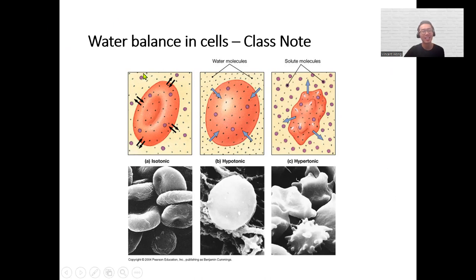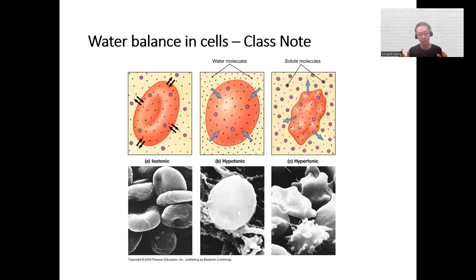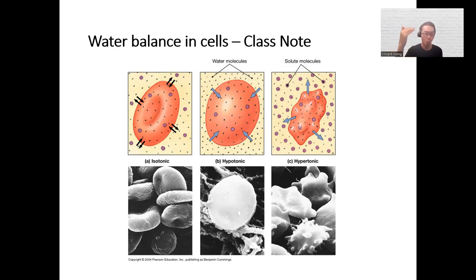These are real red cells shown under the microscope in a hypotonic situation — they swell up and may burst. Having too much water could kill you; it's called water toxicity. On the other hand, cells in a hypertonic environment shrink — that's plasmolysis.